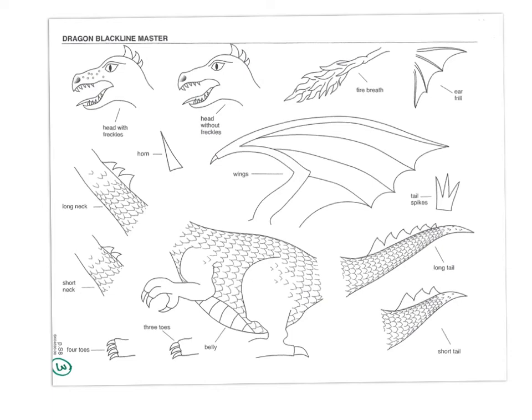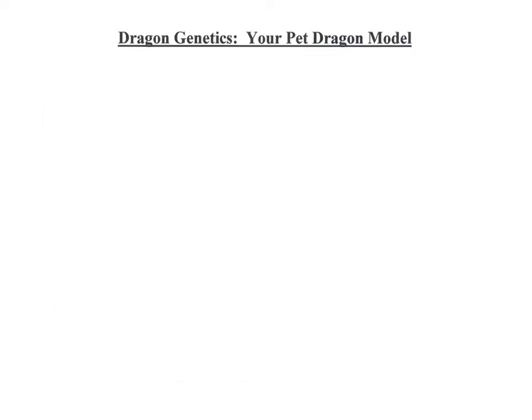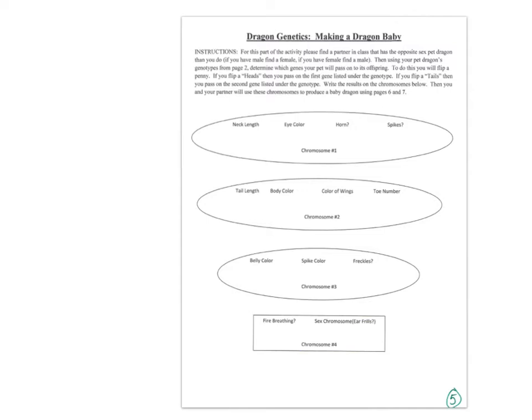Go ahead and cut out the phenotypes that you like. Your choice of phenotype is going to determine your genotype. In this type of lab you can randomize, but go ahead and choose what you want your dragon to look like. Color it in, and put your pet dragon together. Choose whether you want it to have fire breathing, spikes, color, or whatever. Then you're going to make your baby.